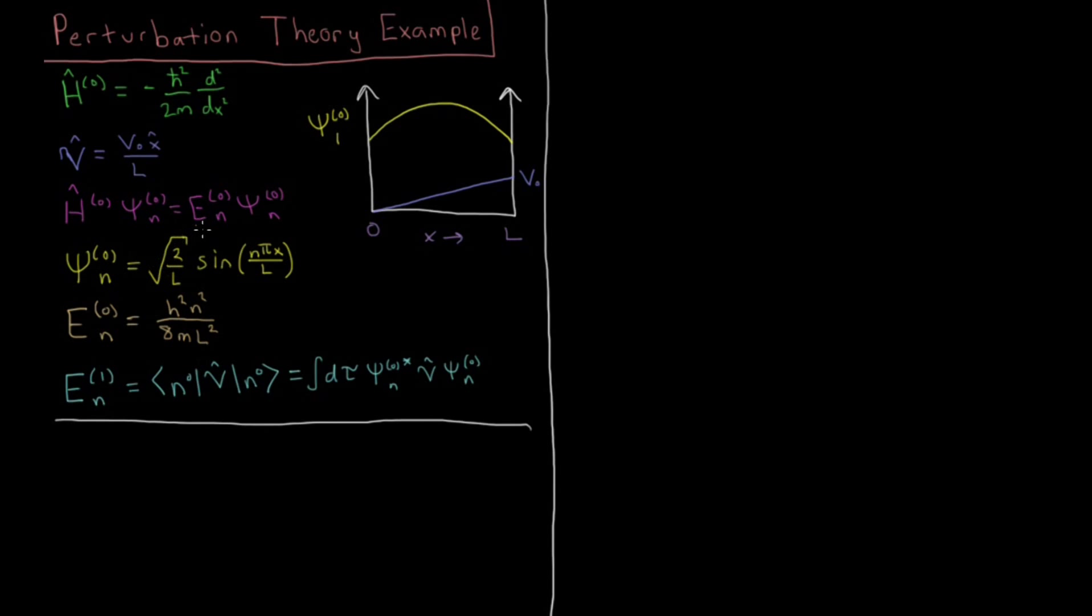That has a reference wave function, so the zeroth order wave function for a given quantum number being square root of 2 over l sine n pi x over l. And the zero order energies of these wave functions, which is just the energy of the reference system, the particle in a box energies, is h-squared n-squared over 8 ml-squared.